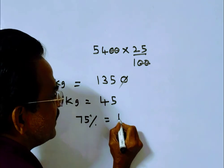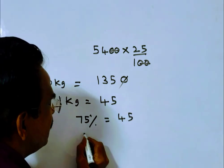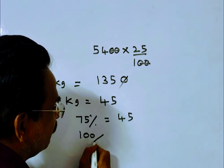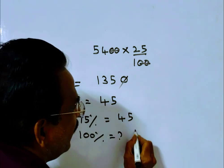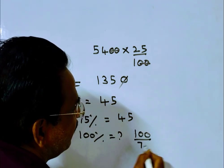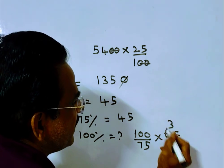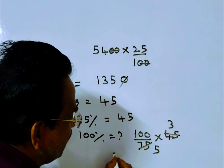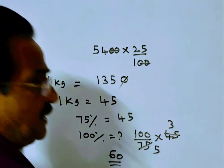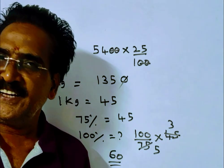So 100 percent equals 60 rupees. 60 rupees per kg is your answer, friends. Thank you.